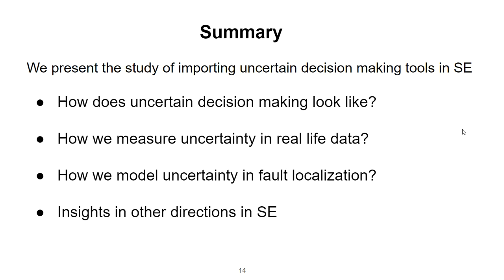In summary, we present using uncertainty decision-making tools to solve problems with software engineering. We introduce classical uncertainty decision-making theory, like evidence theory and fuzzy set theory, then show the improvement after importing evidence theory in fault localization. We hope this will bring insights on adopting uncertainty decision-making in software engineering.